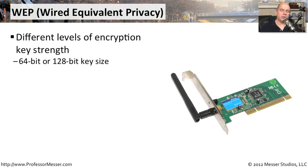WEP was the very first encryption type we used on our 802.11 wireless networks. It stands for Wired Equivalent Privacy — the idea being that now you can have a wireless network that is just as private as the wires you were previously using. There were different levels of encryption available: one was a 64-bit key and the other was a 128-bit key size, depending on where you were in the world and the type of implementation you wanted.